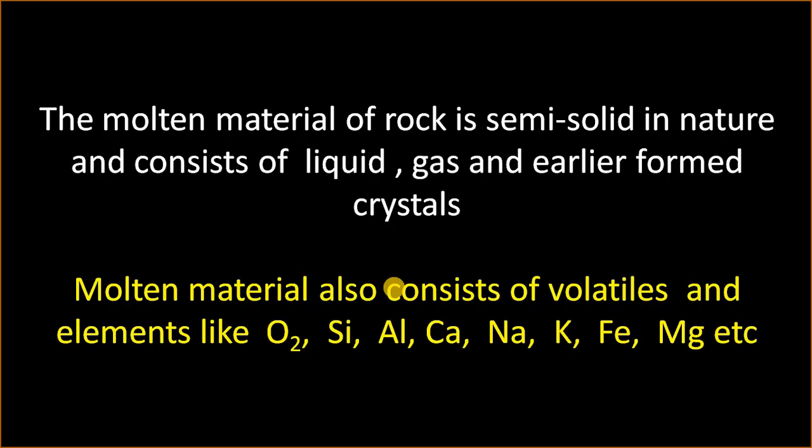The difference between magma and lava is how the molten material is solidified, and it is very clearly shown in the picture. The molten material is semi-solid in nature and includes liquids, gases, and some earlier formed crystals. The molten material also consists of volatiles and elements like oxygen, silicon, aluminum, calcium, sodium, potassium, iron, magnesium, etc.